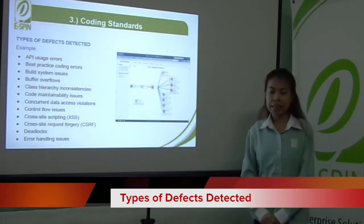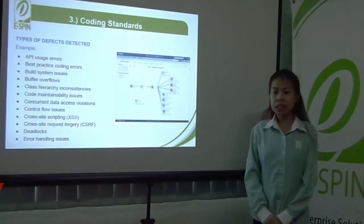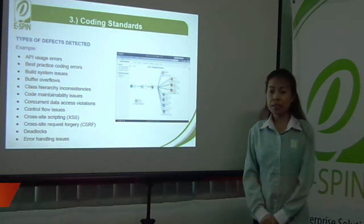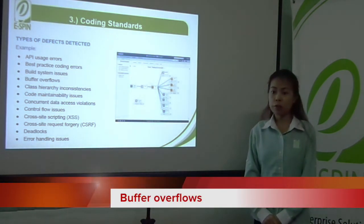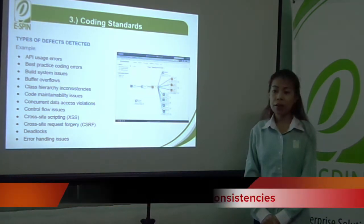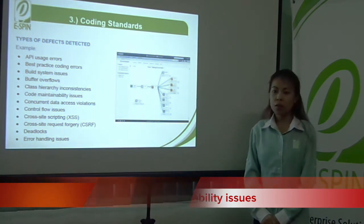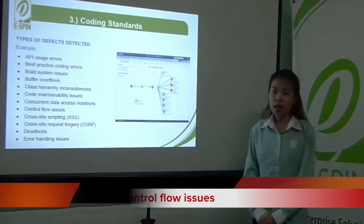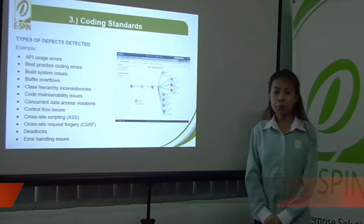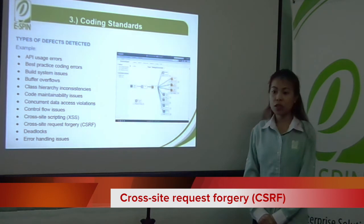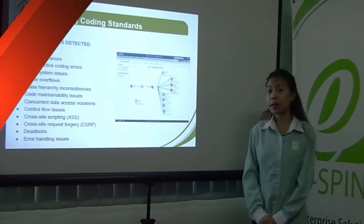Types of defects detected include: API usage errors, best practice coding errors, build system issues, buffer overflows, class hierarchy inconsistencies, code maintainability issues, concurrent data access violations, control flow issues, cross-site scripting, cross-site request forgery, dead code, error handling issues, and many more.